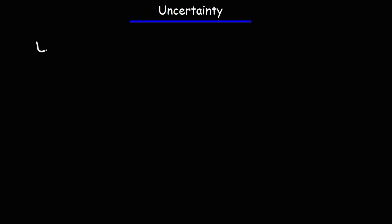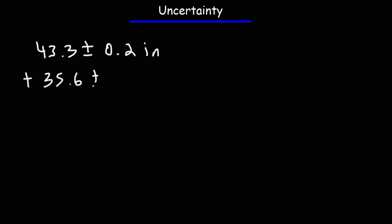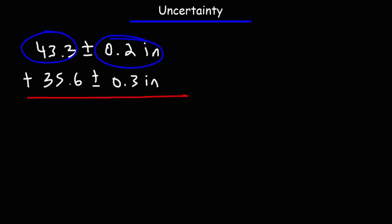Let's start with this example. We have 43.3 plus or minus 0.2 inches, and we're going to add that to 35.6 plus or minus 0.3 inches. What we have here is our measured value and our estimated uncertainty.